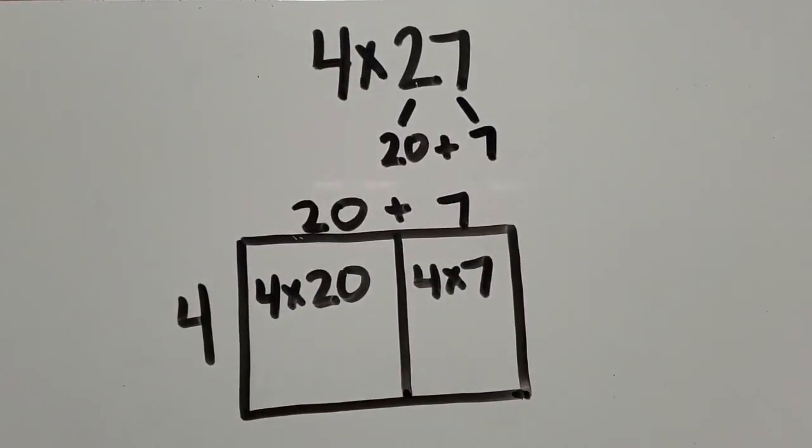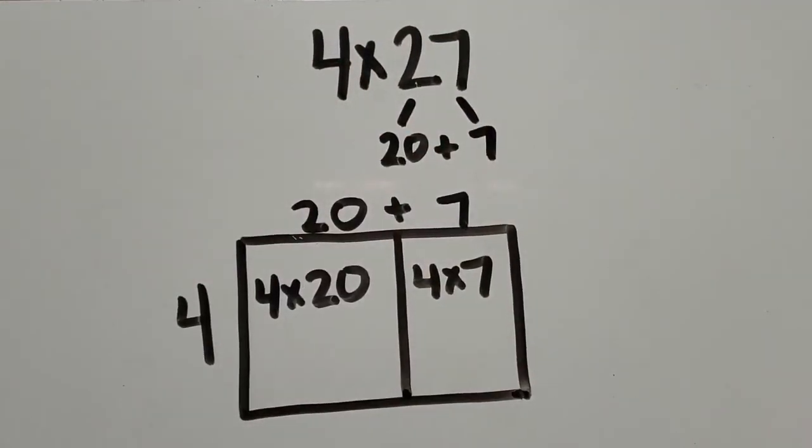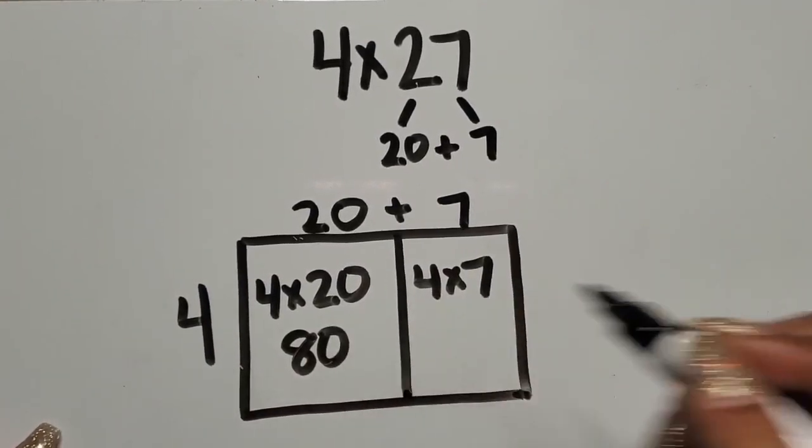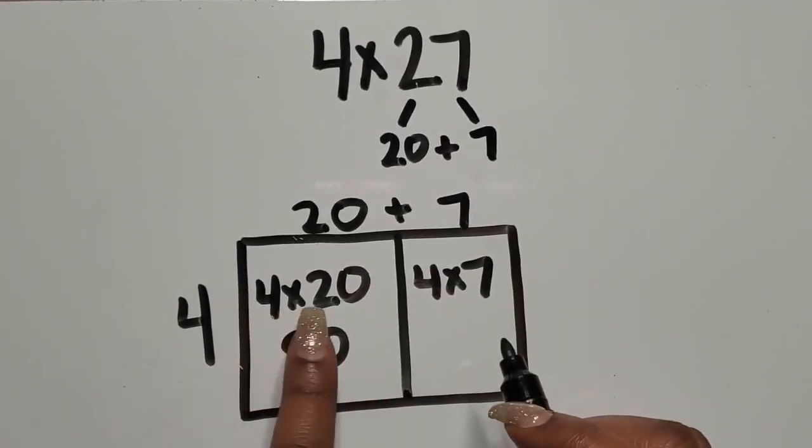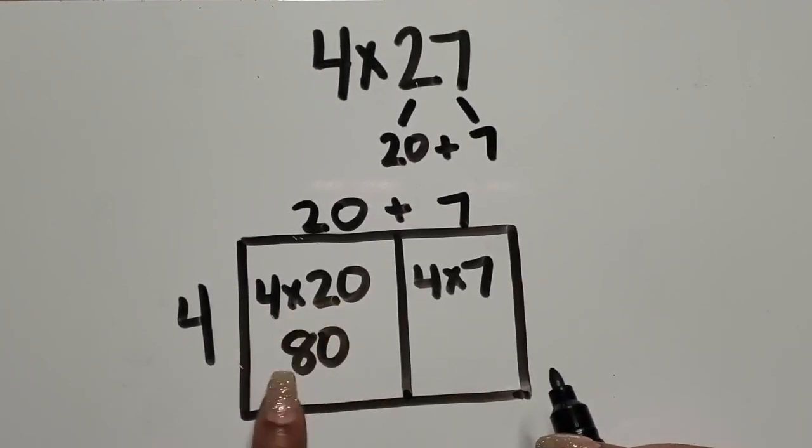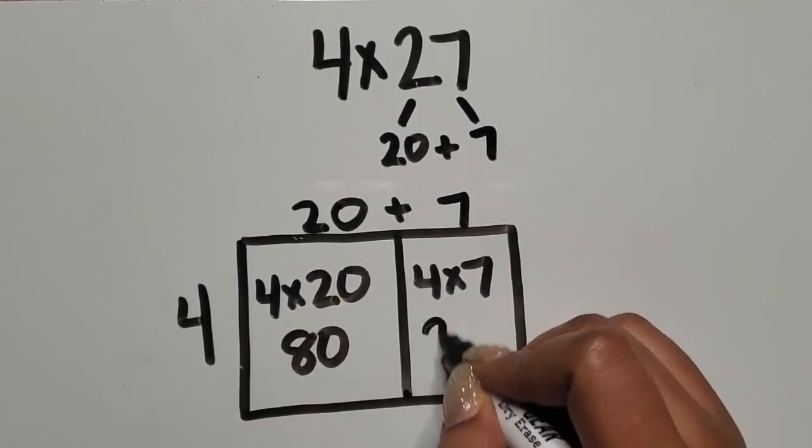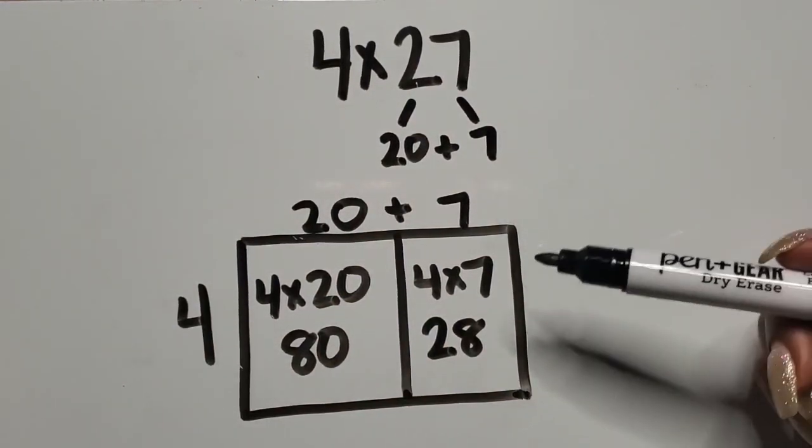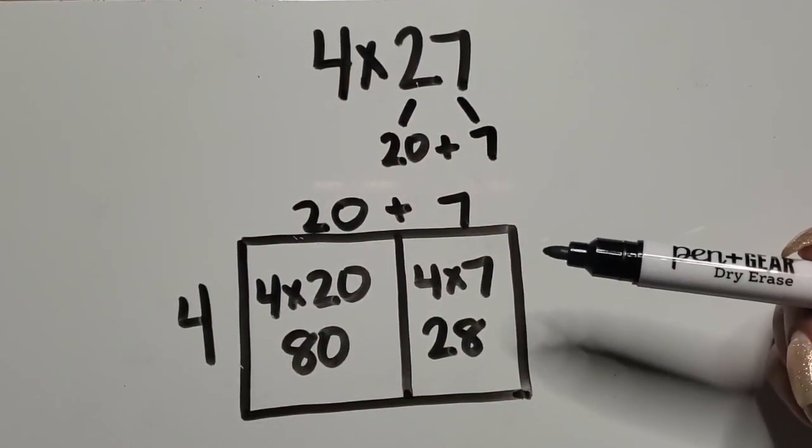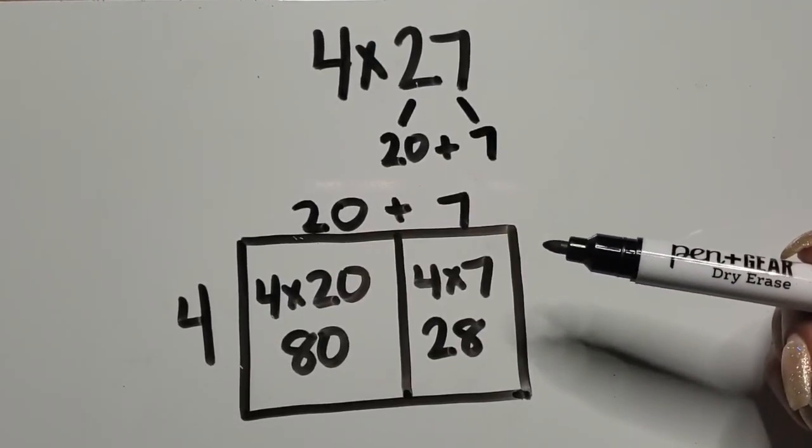This makes it easier for me to multiply this two-digit number because I don't know four times 27 right away. But I know four times 20 is 80 because four times two would be eight and 20 is 10 times greater than two. So then my product is 80. And then I know four times seven is 28. At this point when I'm telling students to use this strategy, they know their facts or they should know a strategy of using their facts.